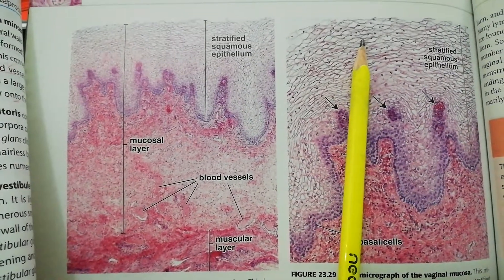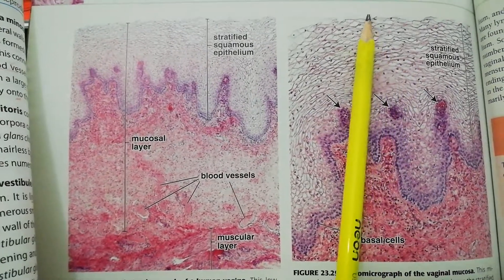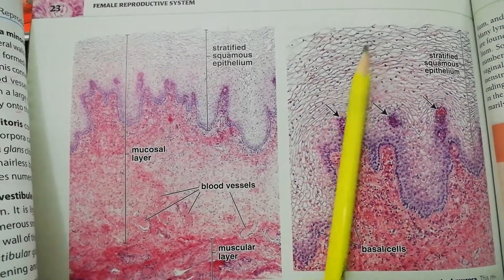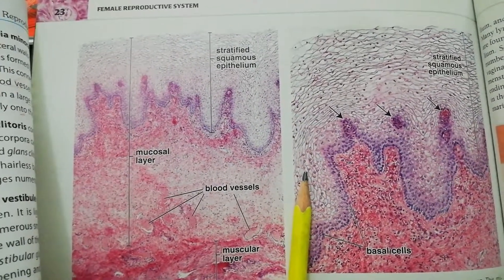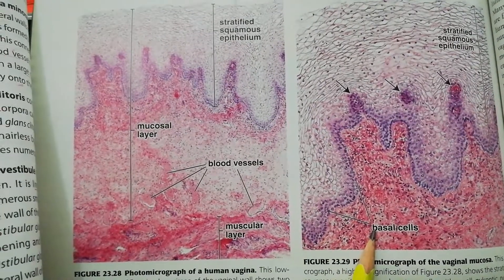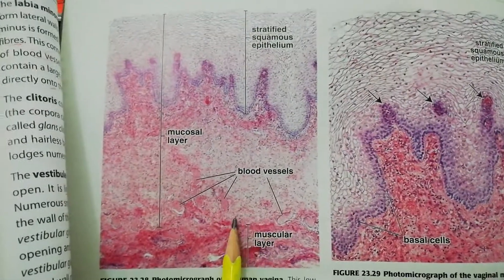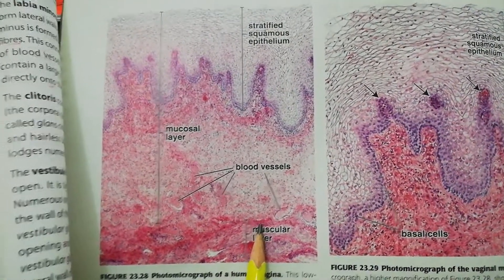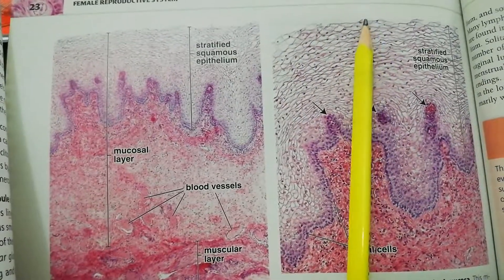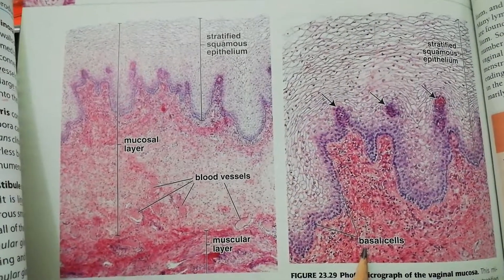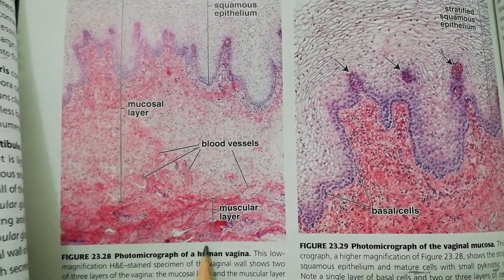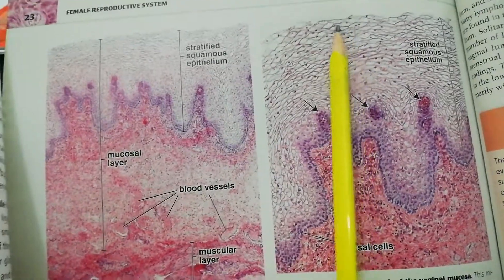Now we have to discuss the vaginal wall. This basically consists of three coats. From inside, this layer is called the mucosa, which is thrown into various folds — transversely lying folds or rugae. You can see the epithelium and below it the lamina propria. The next layer is called the muscularis. It should be kept in mind that in the vaginal wall there is no submucosa — only the mucosa, then the muscularis, and on its very outer side is the adventitia.